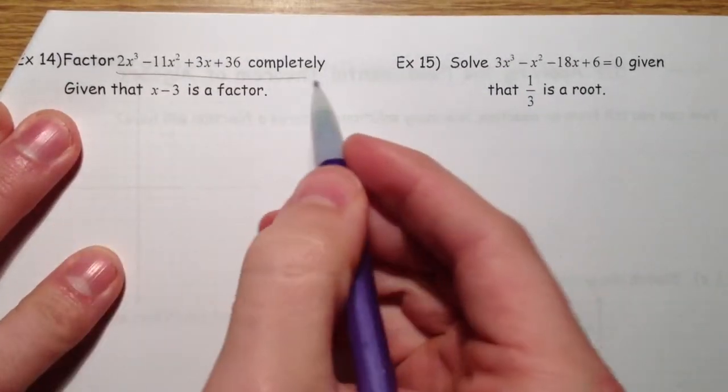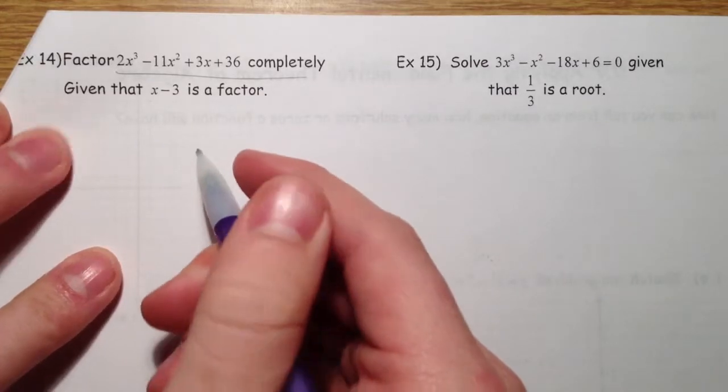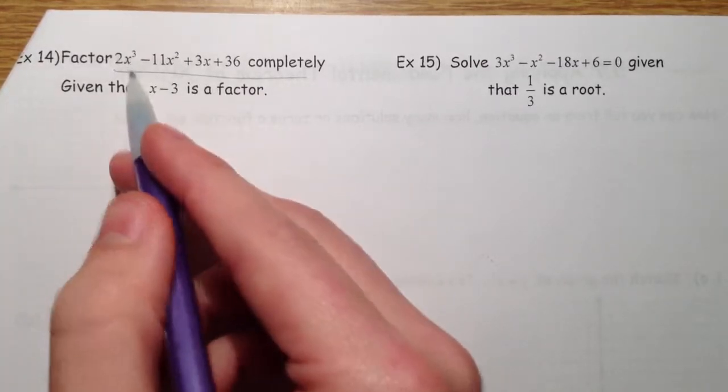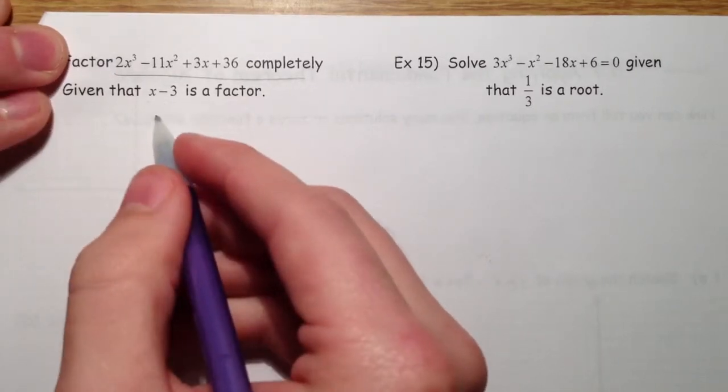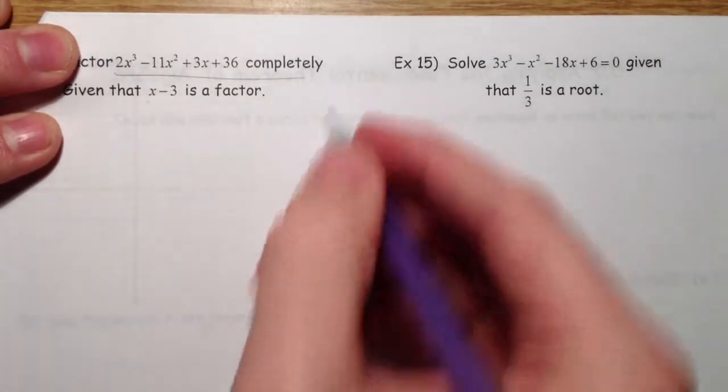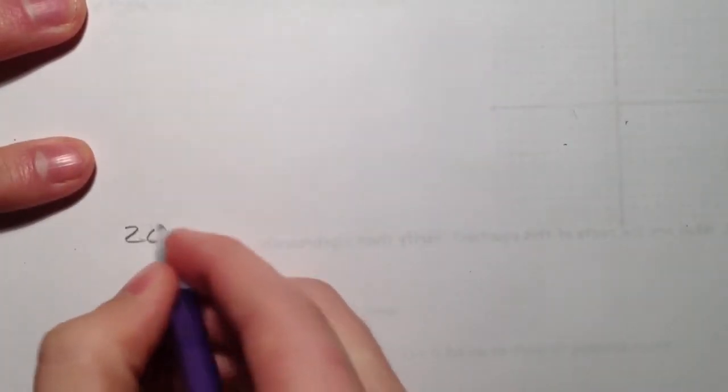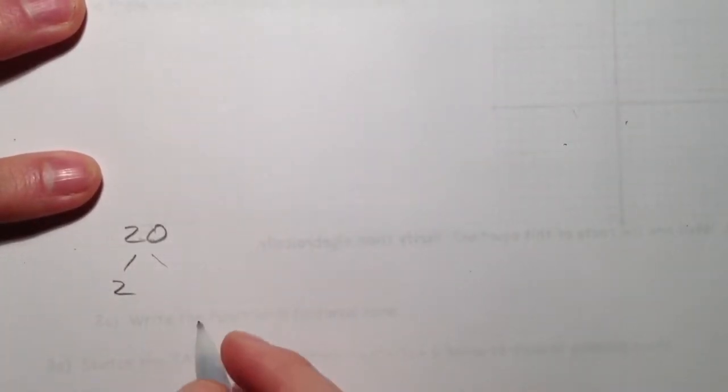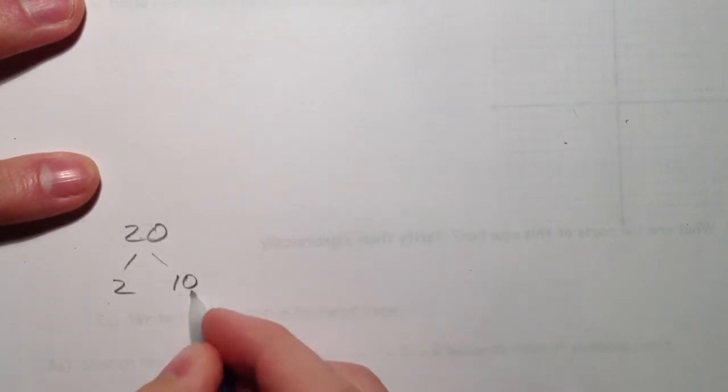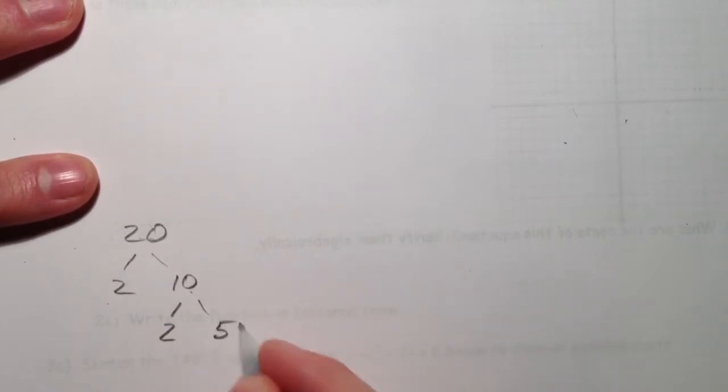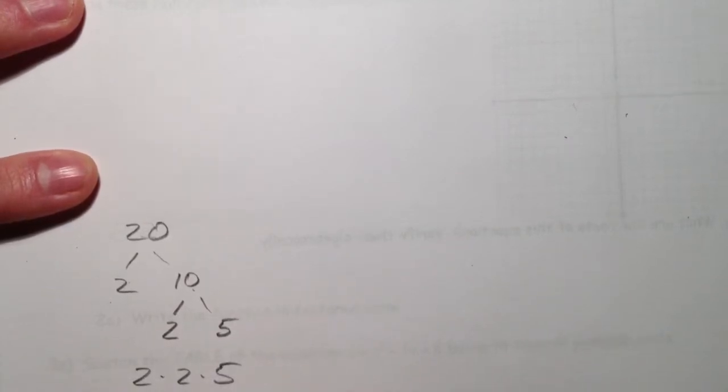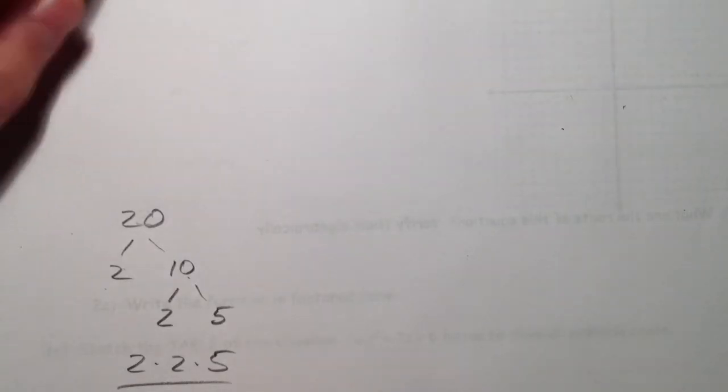Factor this completely if we know that x minus 3 is a factor. So they've given us one factor. So let's divide by x minus 3. Essentially it goes like this. If you knew you wanted to factor 20, and you knew that 2 was a factor because you knew it was even, well divide by 2 and you knew that 2 times 10 after you divided. And then you see, oh it's another even number so I could divide by 2, and you get 2 times 5. So 2 times 2 times 5 is it factored completely. That's what we're going to do, but with polynomials.